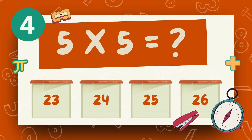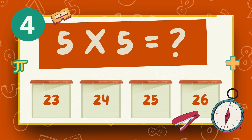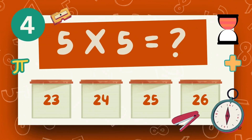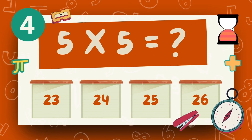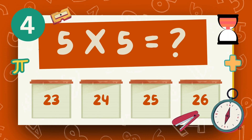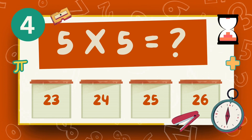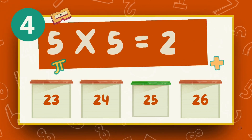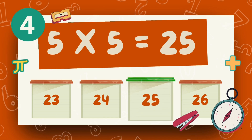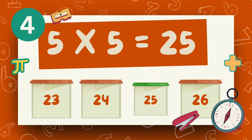What does 5 multiply 5? The answer is 25.